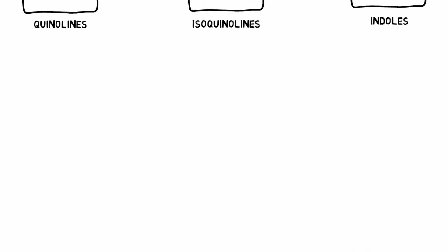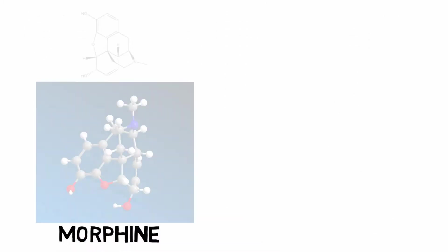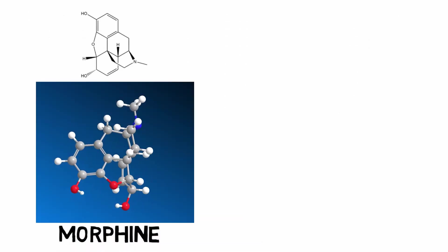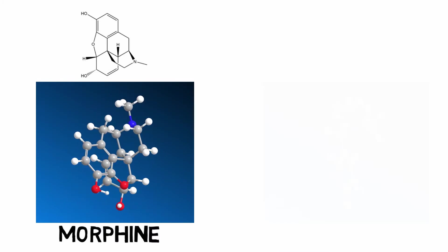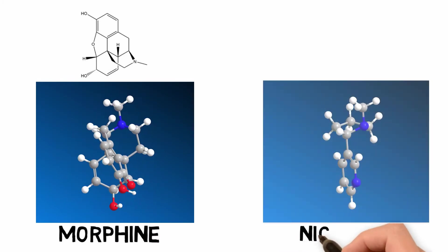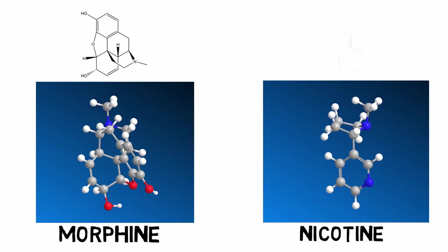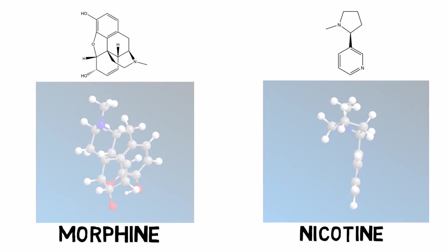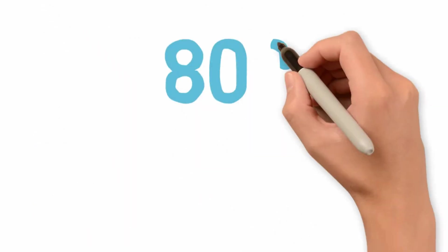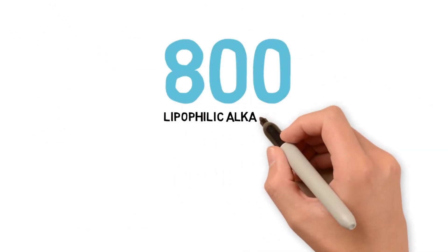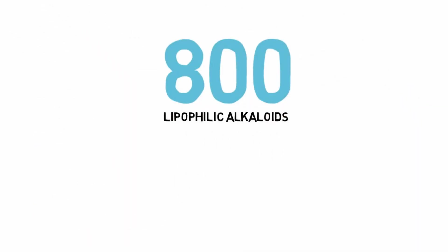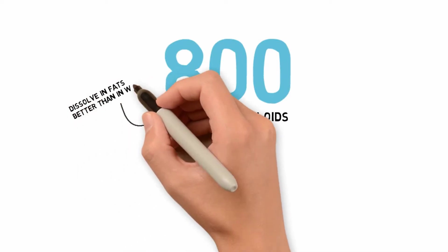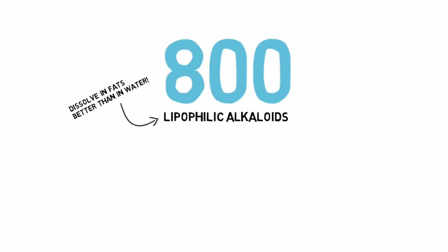Some well-known alkaloids include morphine, a pain medication of the opiate family, and nicotine, a stimulant most famously found in tobacco. Over 800 different lipophilic alkaloids have been found in the skin of various species, all with varying structures and complexities.